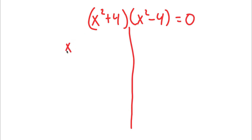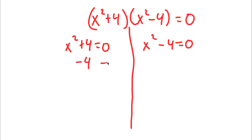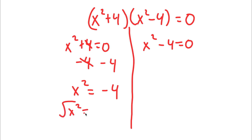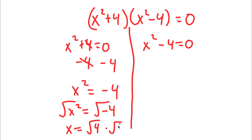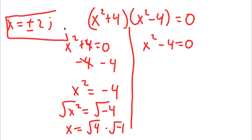This gives me two equations: x squared plus 4 equals 0, and x squared minus 4 equals 0. To solve x squared plus 4 equals 0, I subtract 4 from both sides to get x squared equals negative 4. Taking the square root on both sides: the square root of x squared is x, and the square root of negative 4 is the square root of 4 times the square root of negative 1, which equals positive or negative 2 times i. So x is equal to positive or negative 2i.